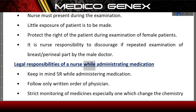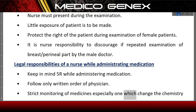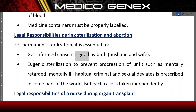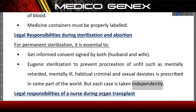Legal responsibilities of a nurse while administering medication: Keep in mind the five rights while administering medication. Follow only written orders of the physician. Strictly monitor medicines, especially those which change the chemistry of the blood. Medicine containers must be properly labeled. For permanent sterilization, it is essential to get informed consent signed by both husband and wife. Eugenic sterilization to prevent procreation of individuals considered unfit — such as the mentally retarded, mentally ill, habitual criminals, and sexual deviates — is prescribed in some parts of the world, but each case is taken independently.